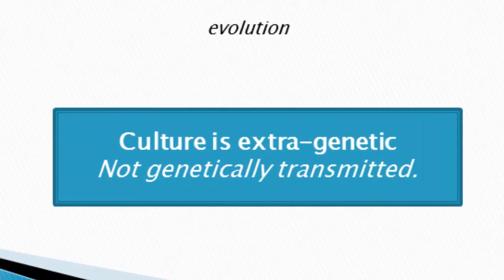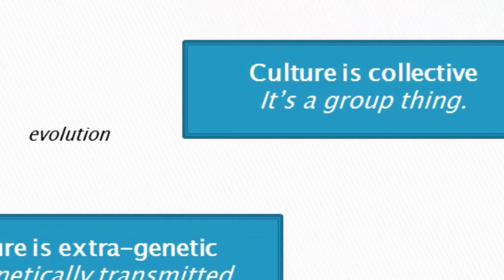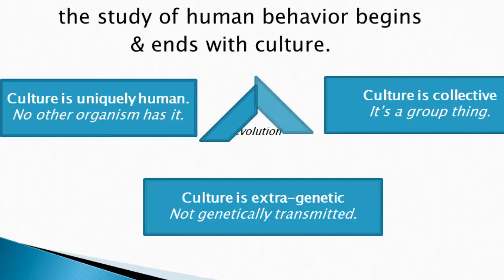There are three basic themes in cultural theory. First, culture is extra-genetic — it's not genetically transmitted. Second, culture is uniquely human and no other organism has it. Third, culture is collective — it's a group thing that transcends individuality and makes individual differences insignificant. Put together, these three themes pretty much obscure evolution altogether, which is why there's been such conflict between evolutionary approaches and the social sciences.